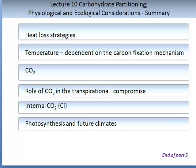In Part 3, you should now have an understanding of heat load strategies in plants and how they impact photosynthesis and partitioning. We have looked extensively at temperature and how it impacts carbon fixation mechanisms, how different concentrations of CO2 can influence this process, and the role of carbon dioxide in the transpirational compromise. We have looked at the concept of internal CO2 concentration, or CI, and what this means. You should now be able to understand how photosynthesis relates in an applied context, and we finish by looking at some future aspects of photosynthesis.